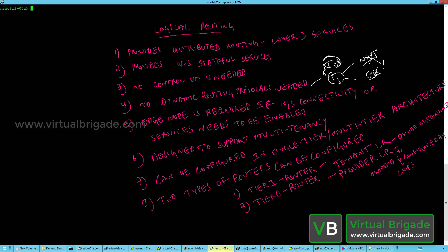In order to deploy the Tier0 logical router you must have the NSX-Edge nodes configured as a transport node. While configuring the Tier0 logical router, the graphical user interface will prompt you to select the NSX-Edge nodes and the NSX-Edge cluster.